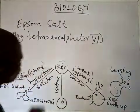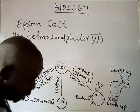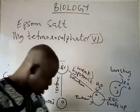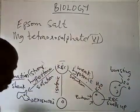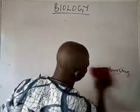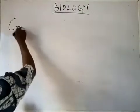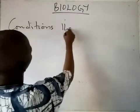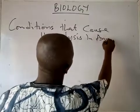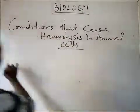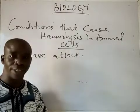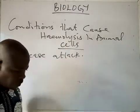Before we close our discussion on hemolysis, we will look at conditions that cause hemolysis. There are just four of them. First, when there is disease attack — when an animal is attacked by disease, it disrupts the normal functioning of the cell and there could be hemolysis of the cell.